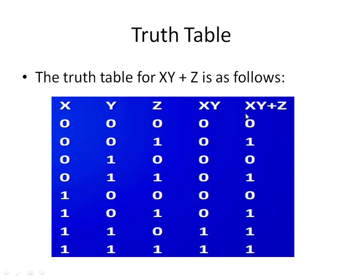Now XY+Z: XY is the AND result and Z is the third variable. 0+0=0, 0+1=1, 0+0=0, 0+1=1, 0+0=0, 0+1=1, 1+0=1, 1+1=1. This is called a truth table because it represents all possible combinations for the expression XY+Z.